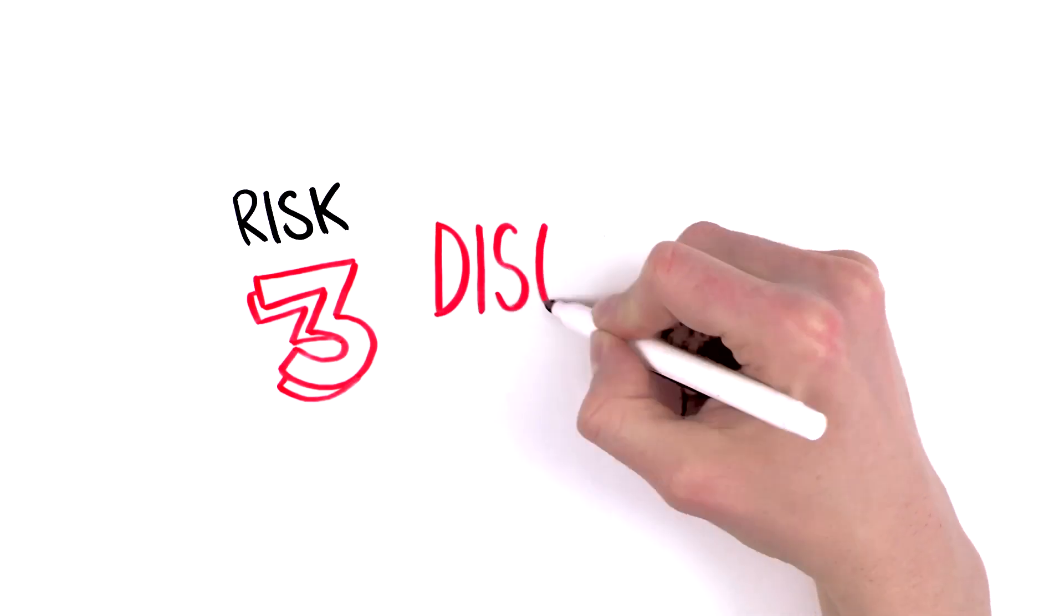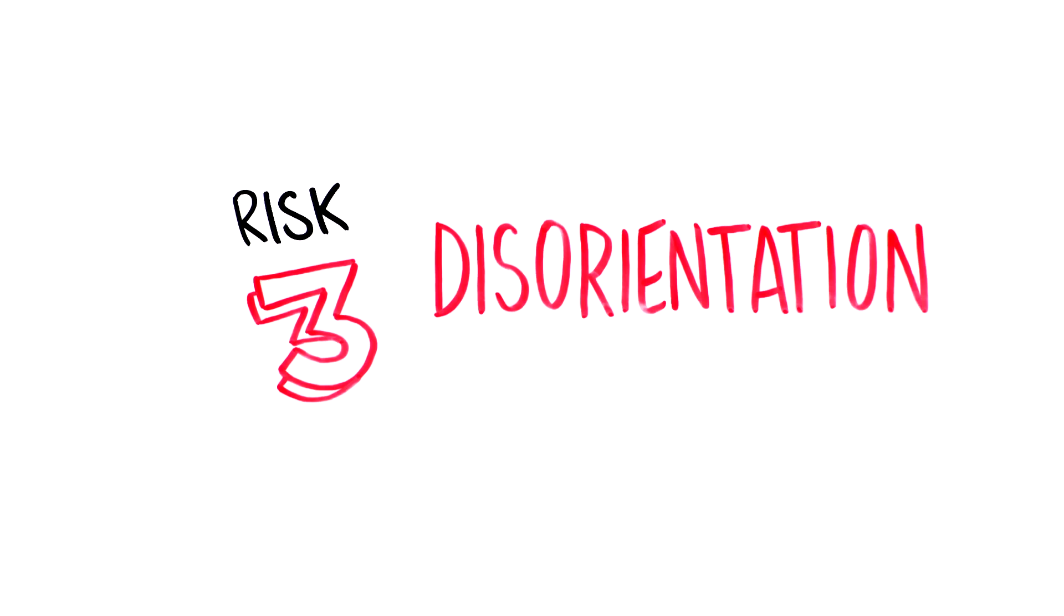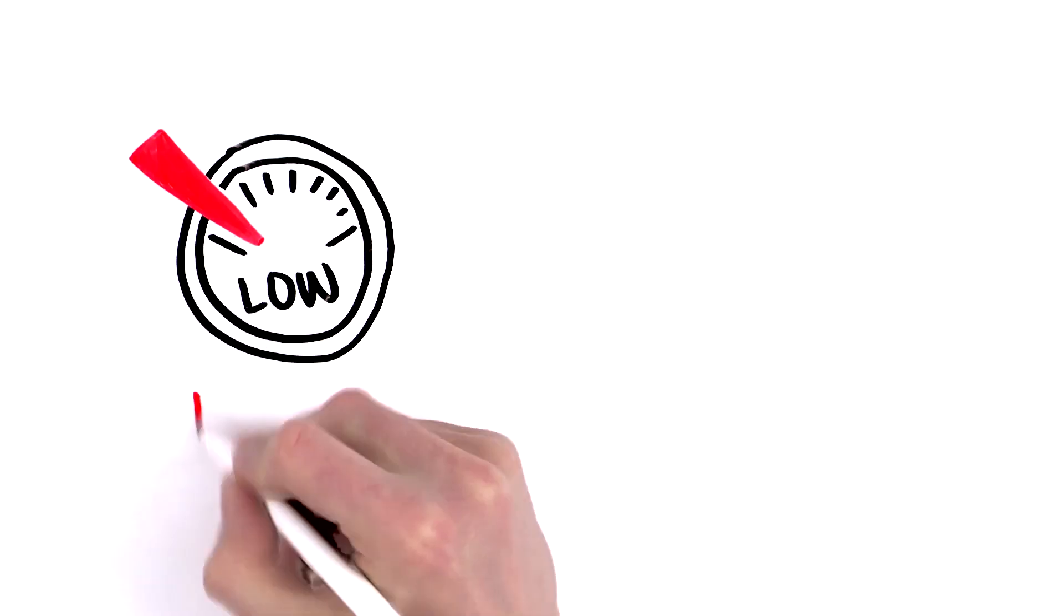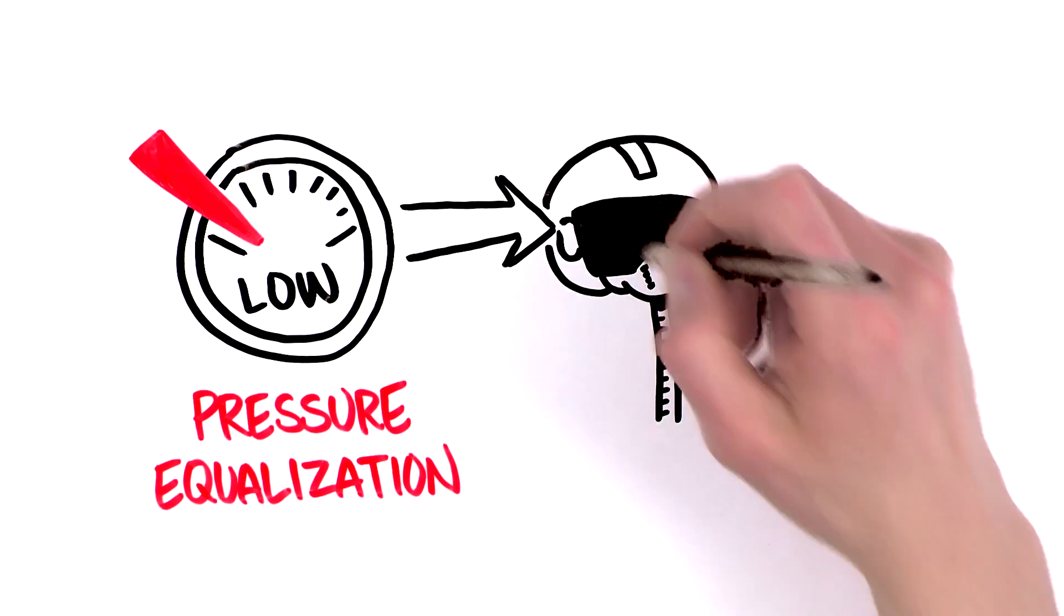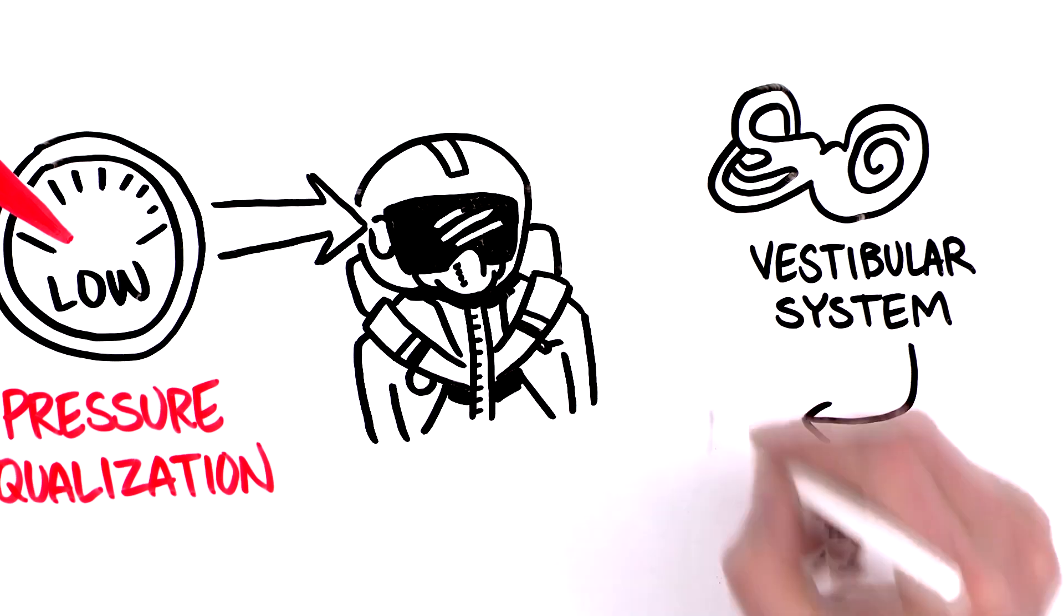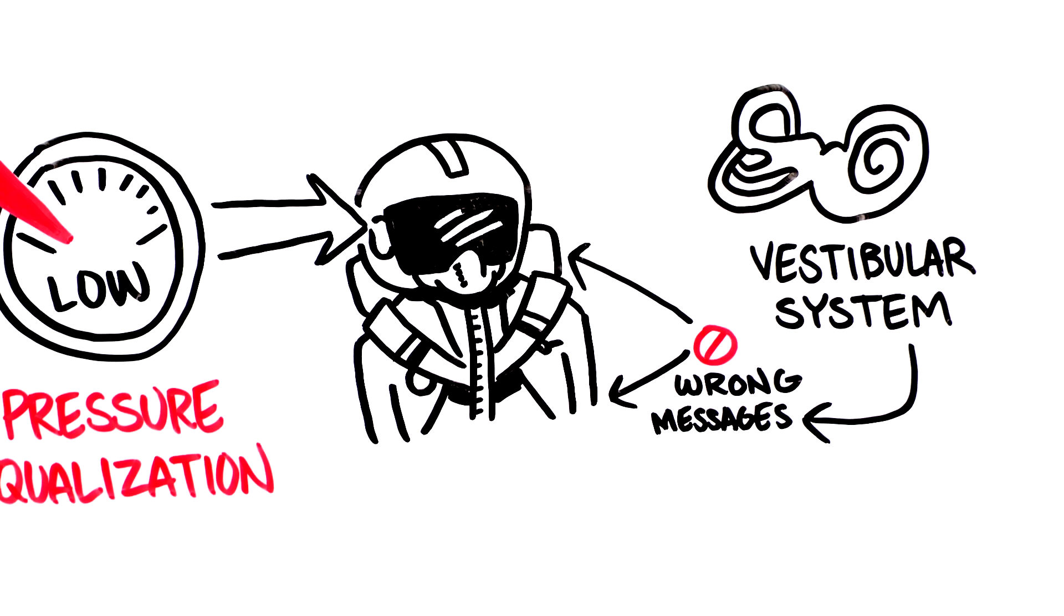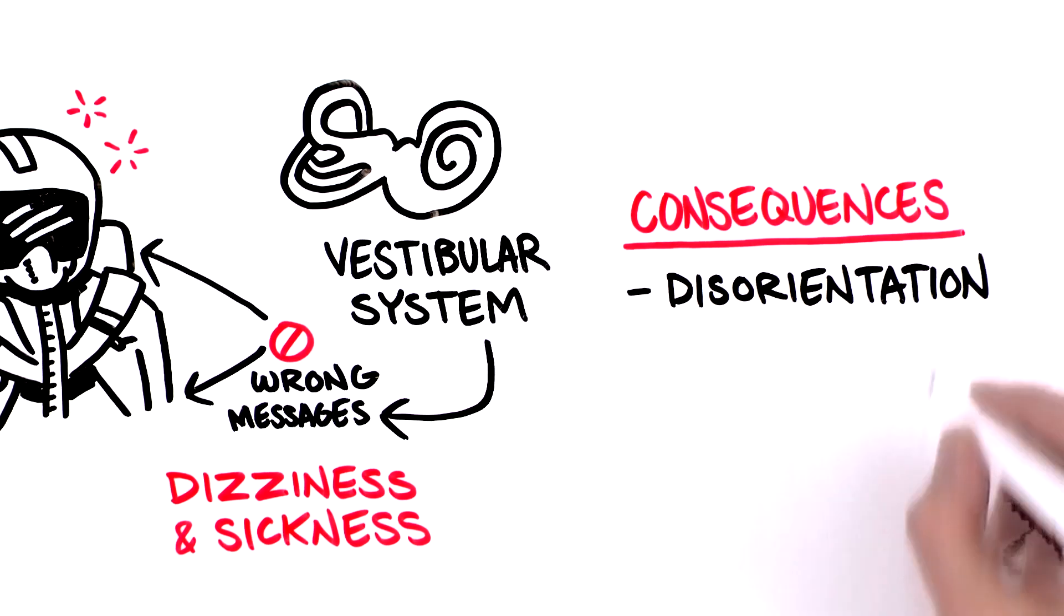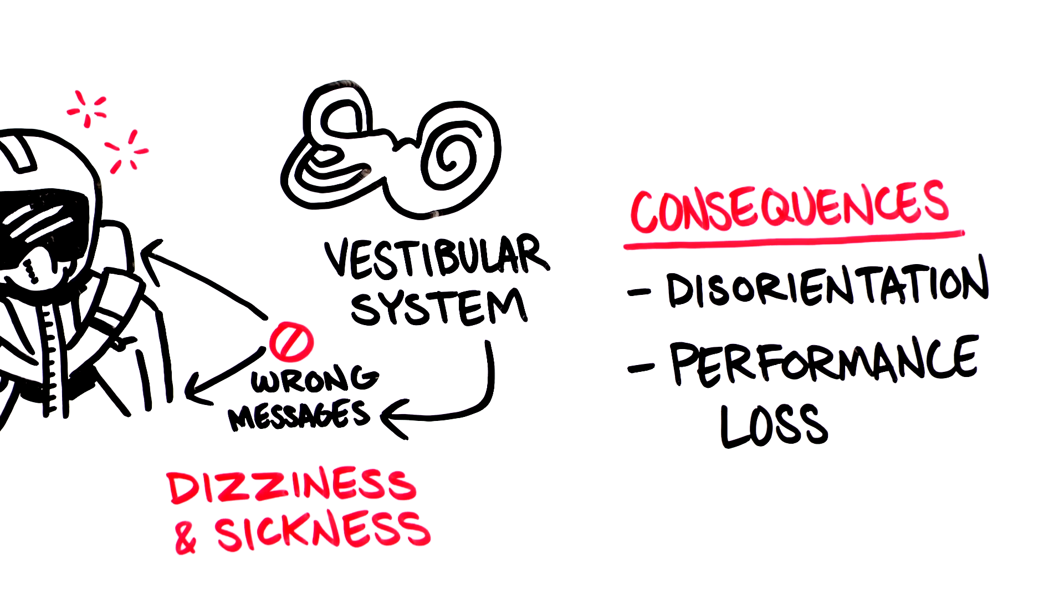Third, you might become disoriented. Even a small reduction in your ability to equalize pressure during climb and descent can lead to wrong messages being sent by your vestibular system, possibly resulting in dizziness and sickness. Both symptoms reduce your performance capability tremendously during flight.